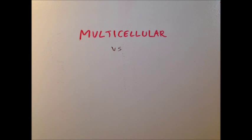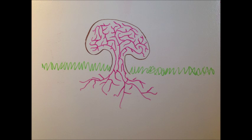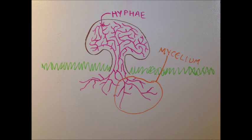The two most common body structures in fungi are multicellular filaments and unicellular fungi, also called yeasts. In multicellular fungi, there are tiny thread-like tubes called hyphae, which grow into networks of branches called mycelium.